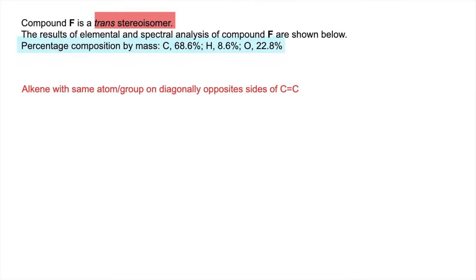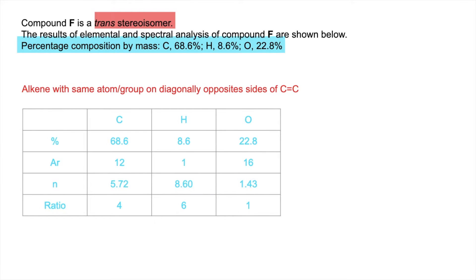Next bit of information is the percentage composition by mass. So obviously that's an empirical formula calculation. So knock up a table with one column for each atom. Put in your percentages, divide by the relative atomic mass. That gives you the moles.